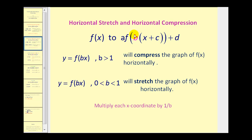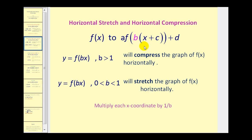Now let's talk about the value of b. When y equals f of bx and b is greater than 1, this will compress the graph of f of x horizontally. And when y equals f of bx and b is between 0 and 1, this will stretch the graph of f of x horizontally. So if we know points on the parent function we can determine the coordinates of the transformed function by multiplying each x-coordinate by 1 over b, or dividing by b, and keeping the y-coordinates the same. So we can say the transformed function is stretched or compressed horizontally by a factor of 1 over b.